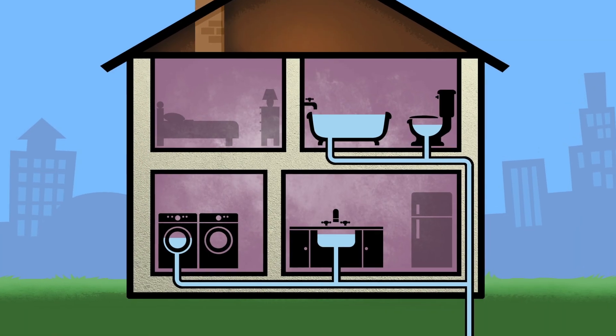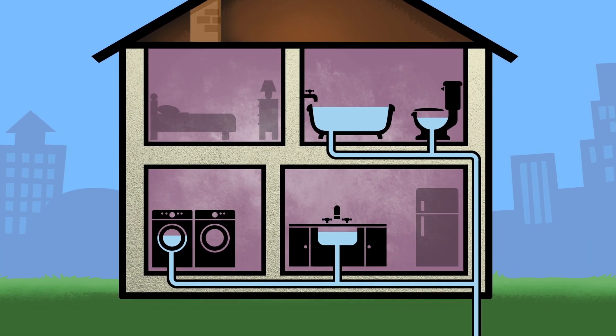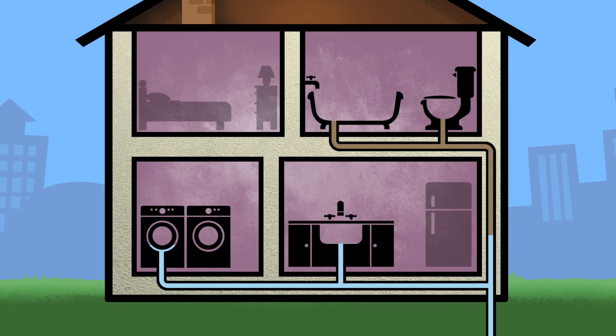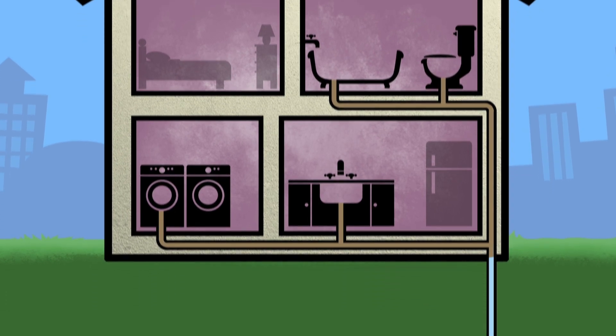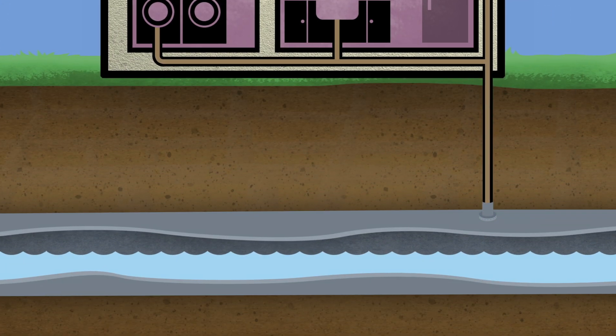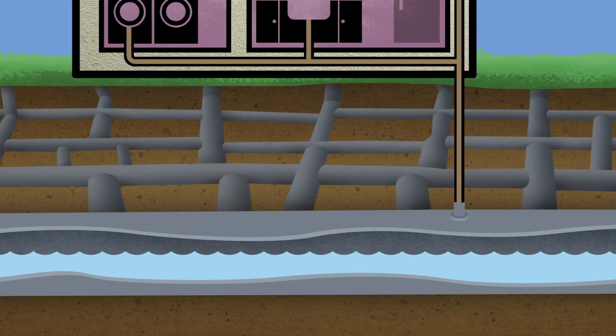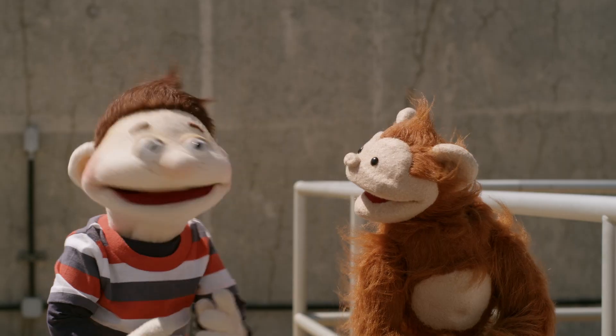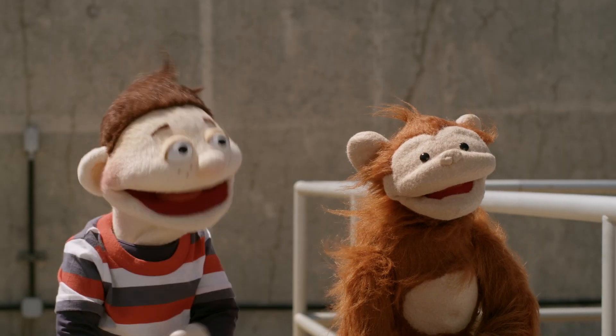When you flush your toilet or run your tap, the water goes down several pipes inside the walls of your house to the sewer. Sewers are a whole bunch of pipes that run beneath the entire city. Just imagine all those toilets in all those buildings and houses, flushing every day. That's a lot of flushes!